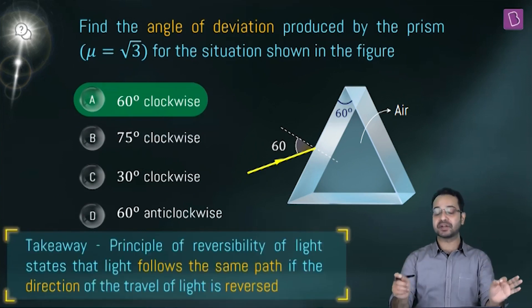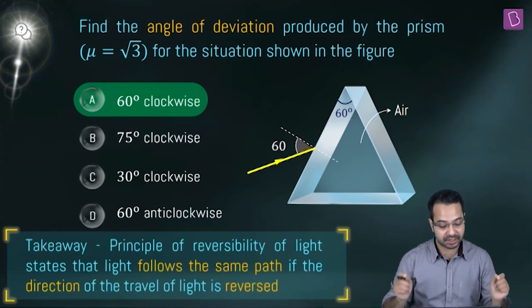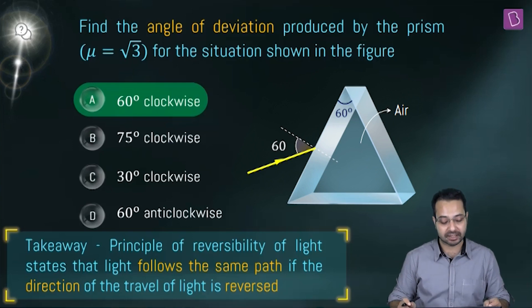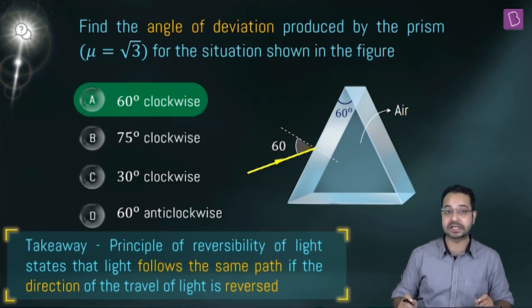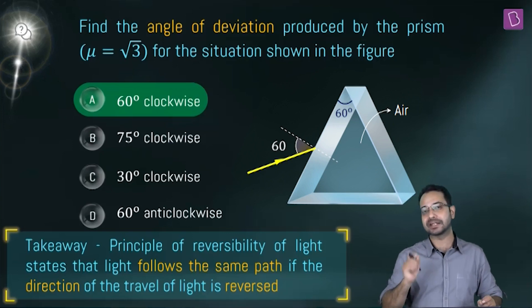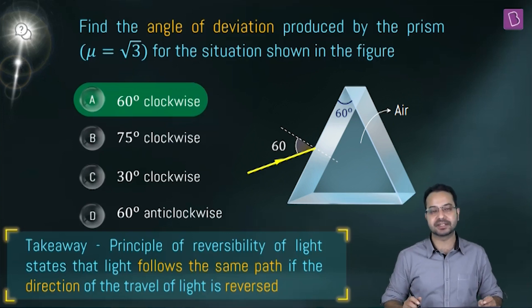The key takeaway is the principle of reversibility of light, which states that light follows the same path if the direction of travel is reversed — a very important and interesting principle to keep in mind.